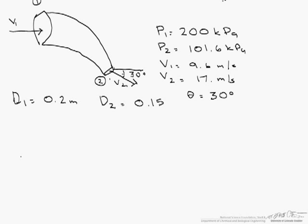We start with our momentum at section 2, so that's rho, and now we have to find our little v, which is the y-component of velocity. Here's our V2, here's our 30 degrees, and here's our y-component. So the y-component is going to be V2 sin(theta). However, if you notice — drawing our coordinate system — this is in the negative y direction, so our v is negative.